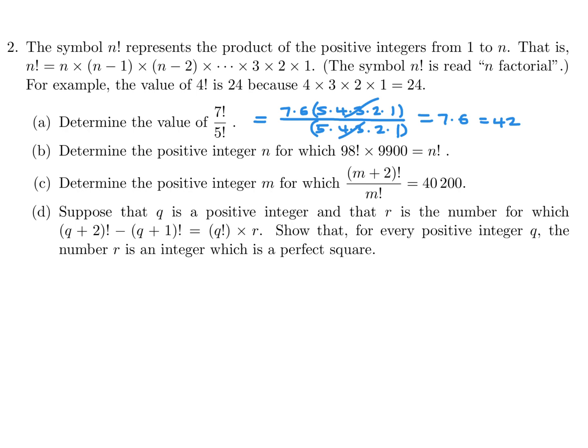Determine the positive integer n for which 98 factorial times 9900 is n factorial. 98 factorial, this number is actually just 99 times 100. And that, if you combine this with this and this, that's just 100 factorial. And therefore, if 100 factorial is n factorial, n is equal to 100.